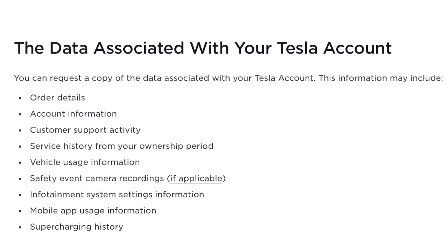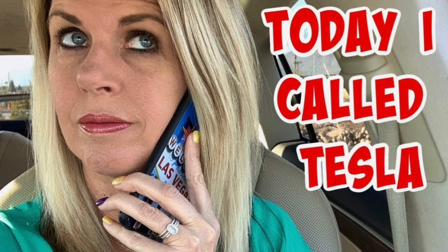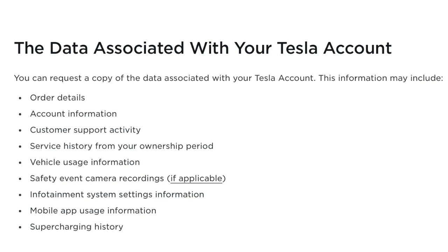At the end of this video, I'm going to give you the answer to a burning question I've had for a long time using the data I just received. So what data might Tesla send you? Here's a list. Number one: order details — I didn't actually get that, probably because I'm a second owner. Account information — who cares. Customer support activity — I didn't get that either, which I found interesting since I've called Tesla no less than 50 times.